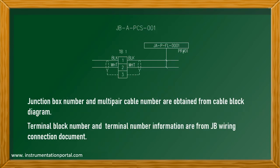This is the junction box section. Junction box number and multipair cable number are obtained from cable block diagram. Terminal block number and terminal number information are from JB wiring connection document.